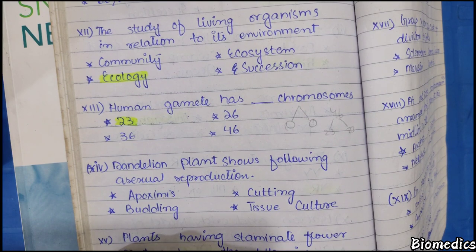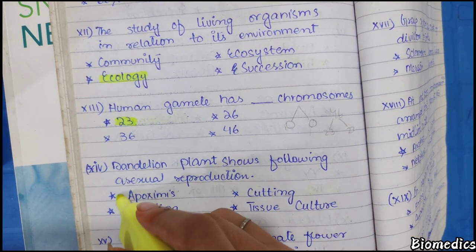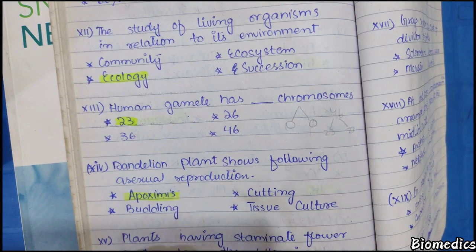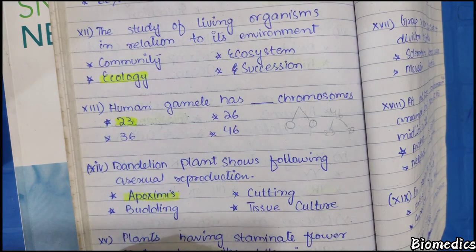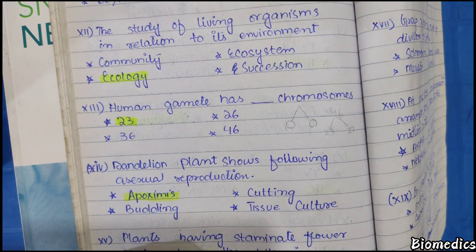Dandelion plants show which type of sexual reproduction? Dandelion plants are examples of apomixis, which involves reproduction without fertilization.